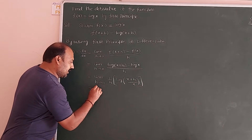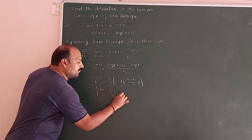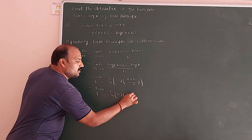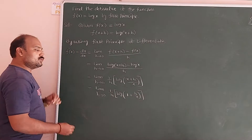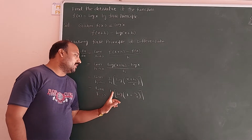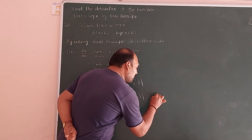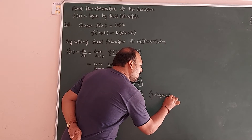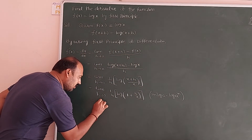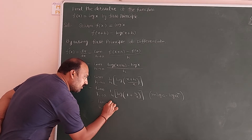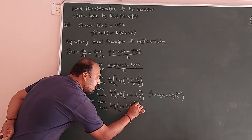We can simplify: limit h→0 of (1/h) · log[x/x · (1 + h/x)], which is limit h→0 of (1/h) · log(1 + h/x). Now, using the formula m·log(a) = log(a^m), we can write this as: limit h→0 of log(1 + h/x)^(1/h).